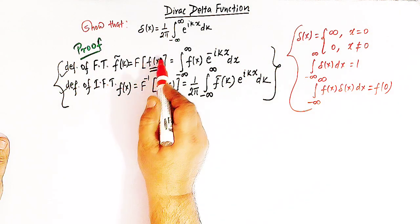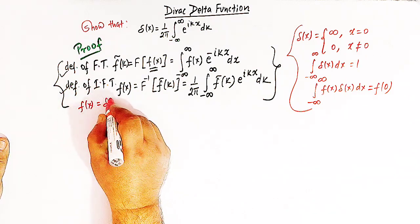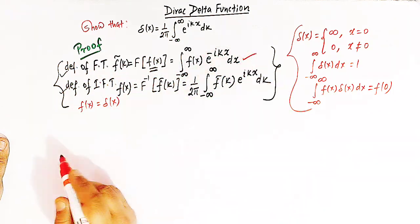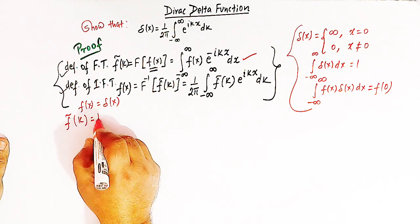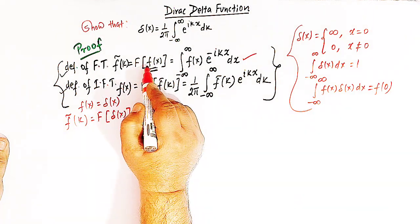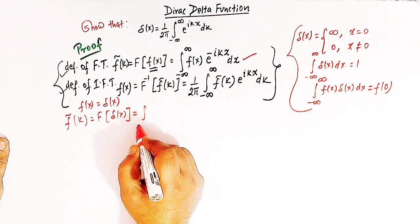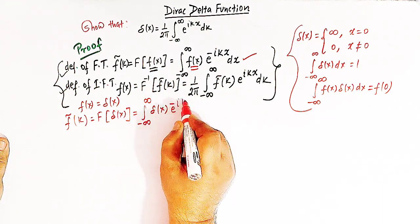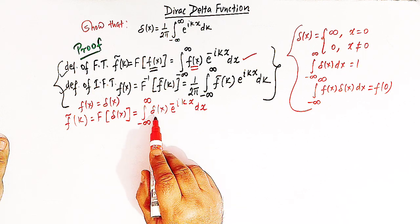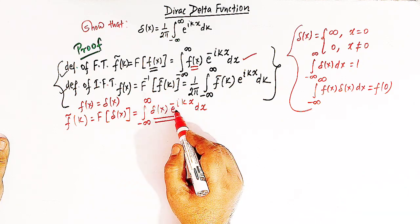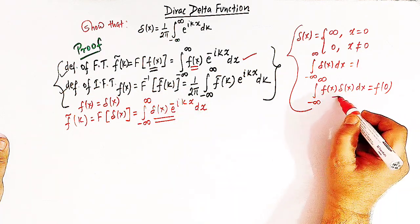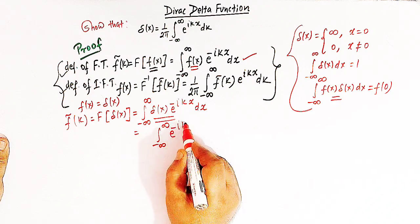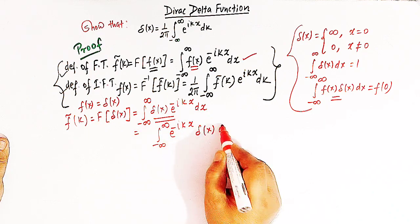Now let us replace the function f of x by the delta function, delta of x. The Fourier transform of the delta function is given by: the Fourier transform of delta of x equals the integral from minus infinity to infinity of delta of x, e raised to minus ikx, dx. We can rewrite this integral as the integral from minus infinity to infinity of e raised to minus ikx times delta of x.